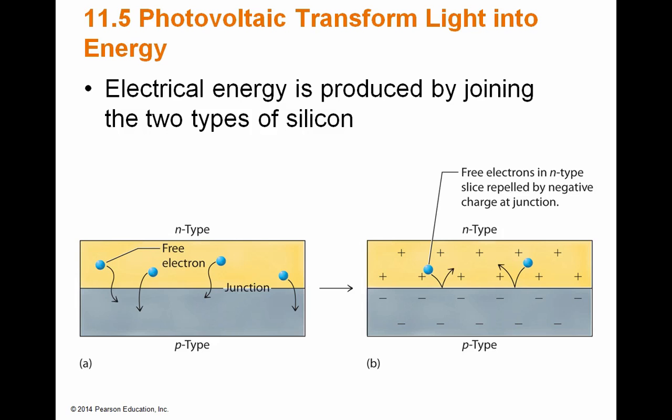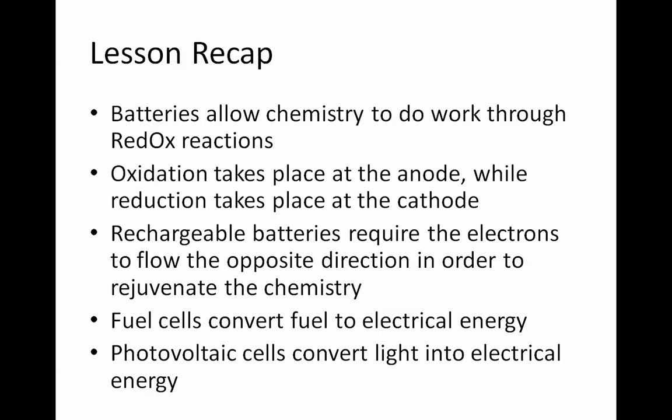To recap: batteries allow chemistry to do work through redox reactions. Oxidation takes place at the anode while reduction takes place at the cathode. Rechargeable batteries require electrons to flow in the opposite direction in order to rejuvenate the chemistry. Fuel cells convert fuel to electrical energy, and photovoltaic cells convert light into electrical energy.